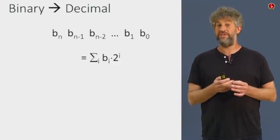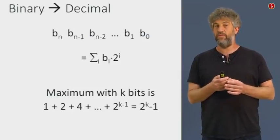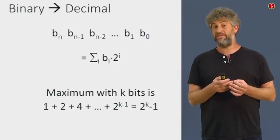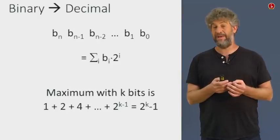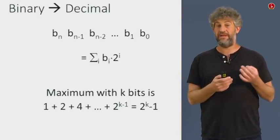One thing that we should note at this point: if we look at the maximum number we can represent with k bits, well, we sum up from 2 to the 0, all the way to 2 to the k minus 1. Remember that if we start counting from 0, the last bit is indexed k minus 1.